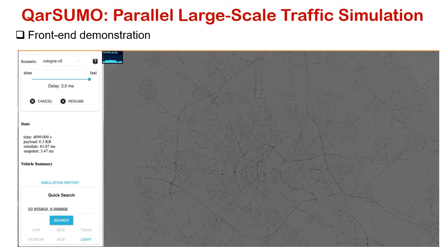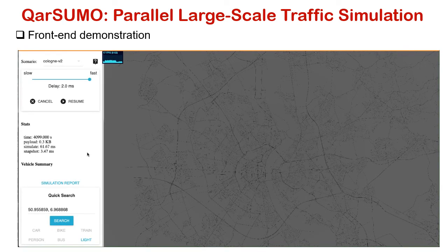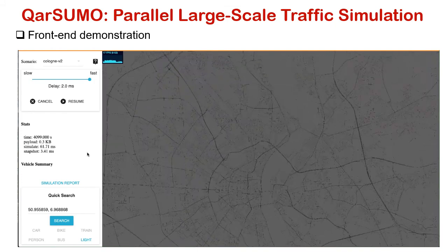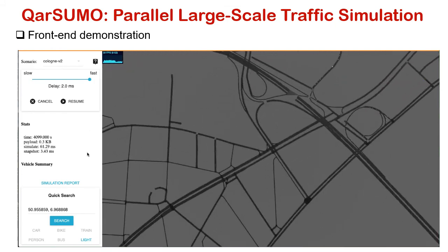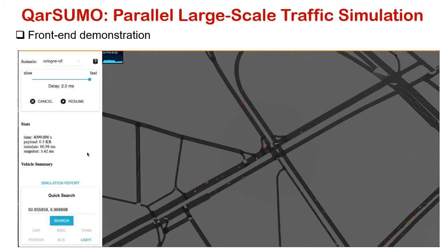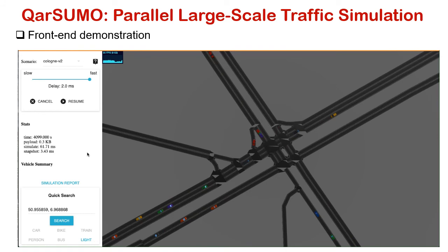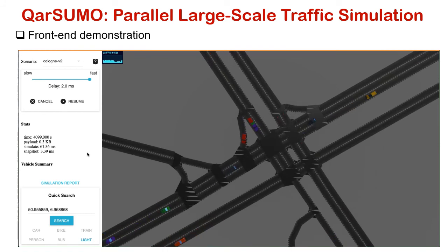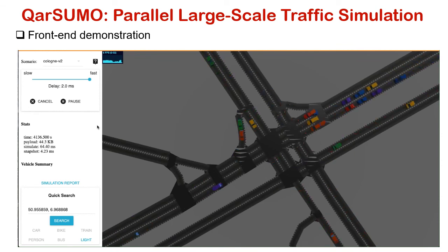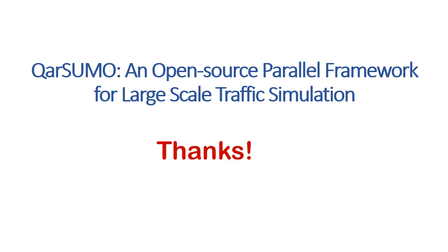Here is the demo. The left side shows selected statistics while the right side visualizes a sample traffic simulation on the Cologne City network. For example, here we see the vehicles waiting and going at a traffic light. This work is still ongoing, and we plan to open-source it in the future. Thanks everyone.